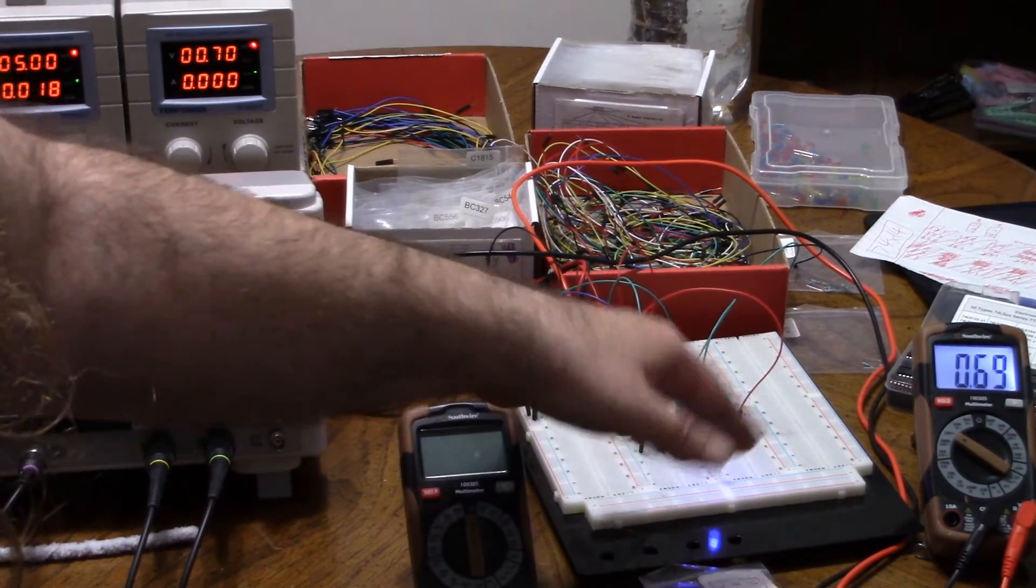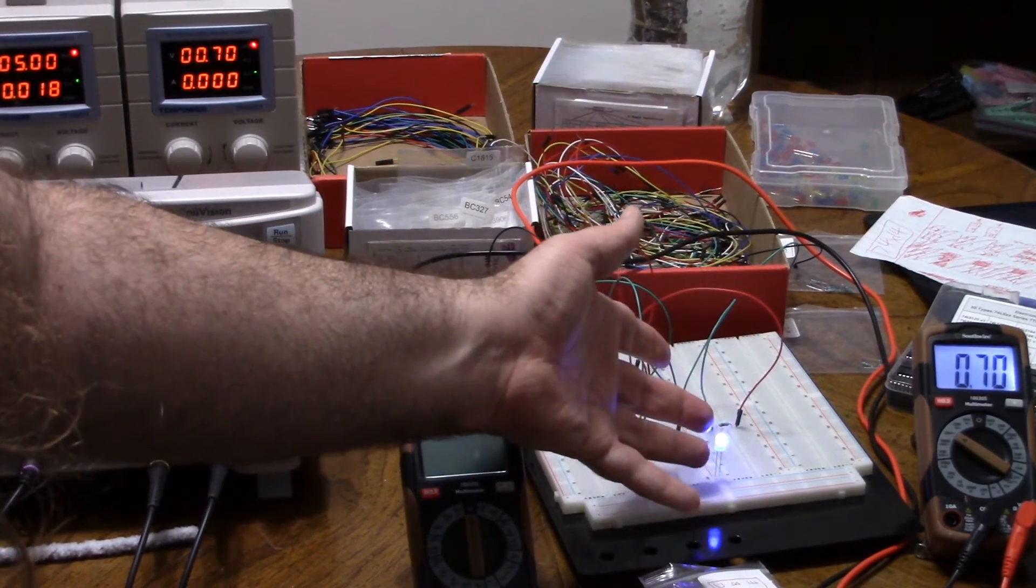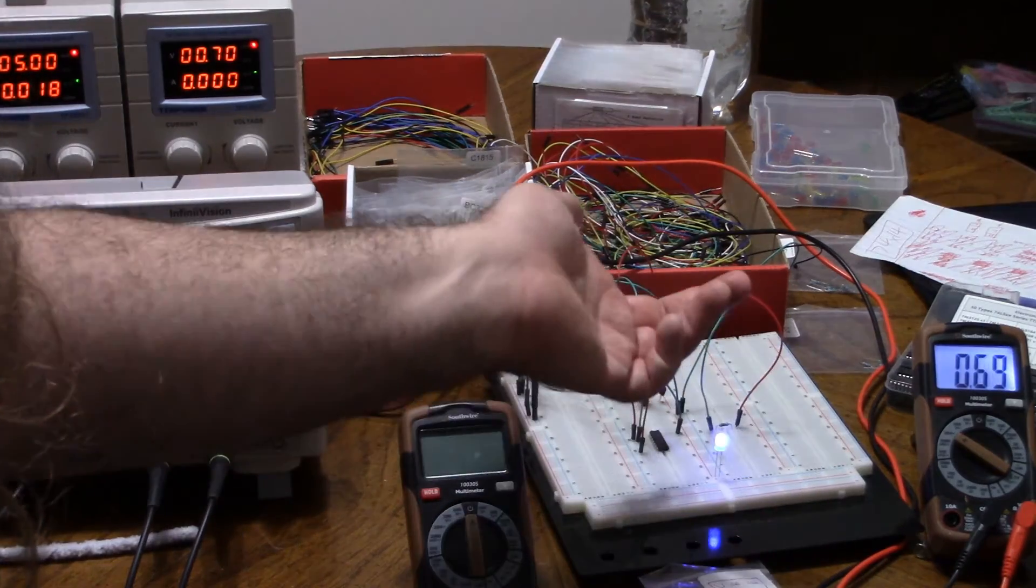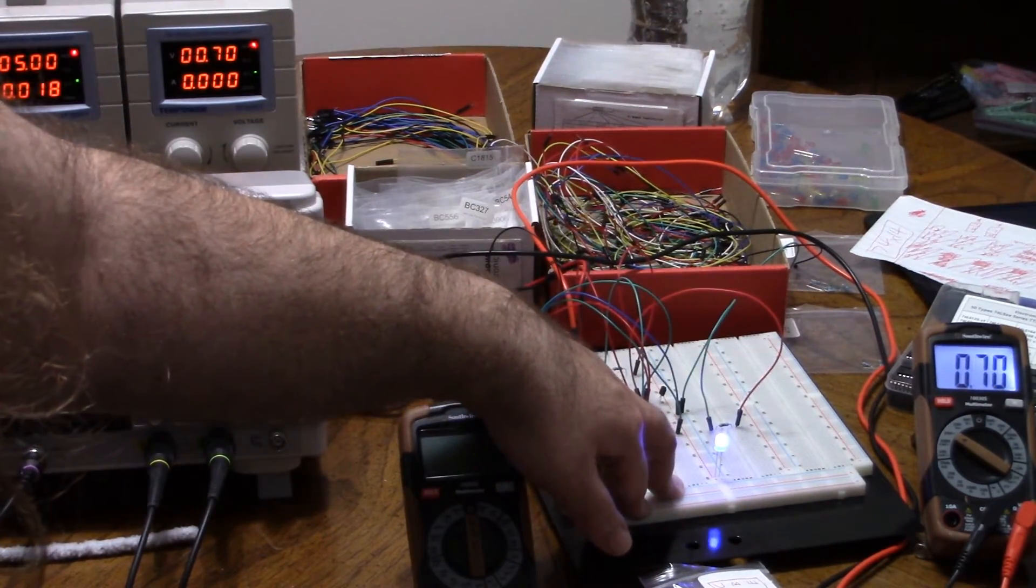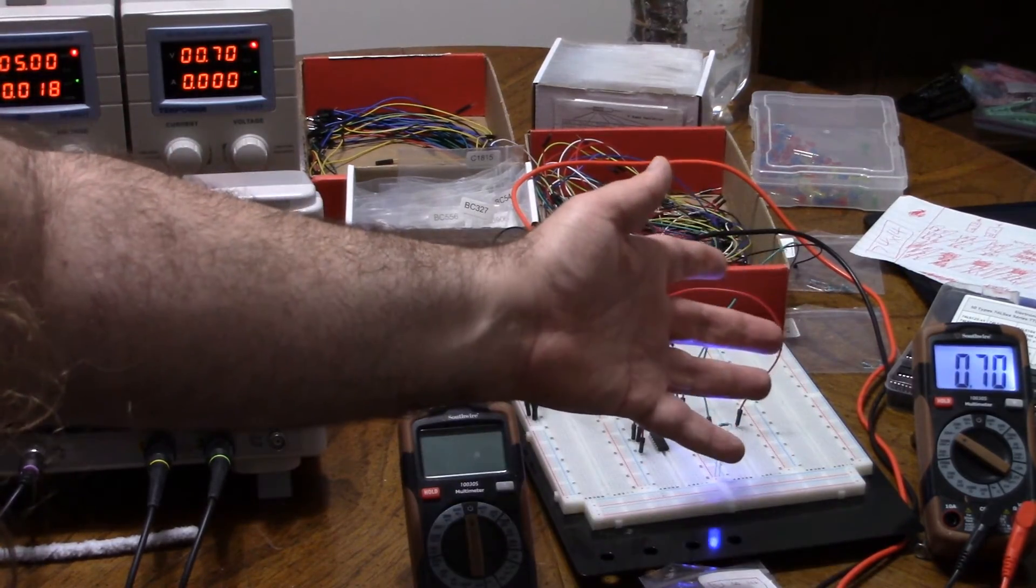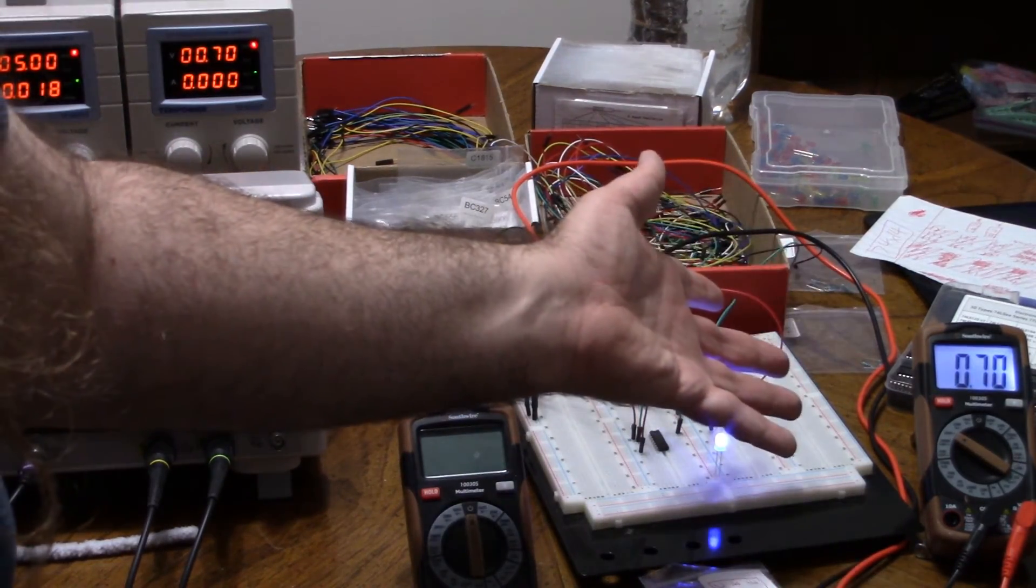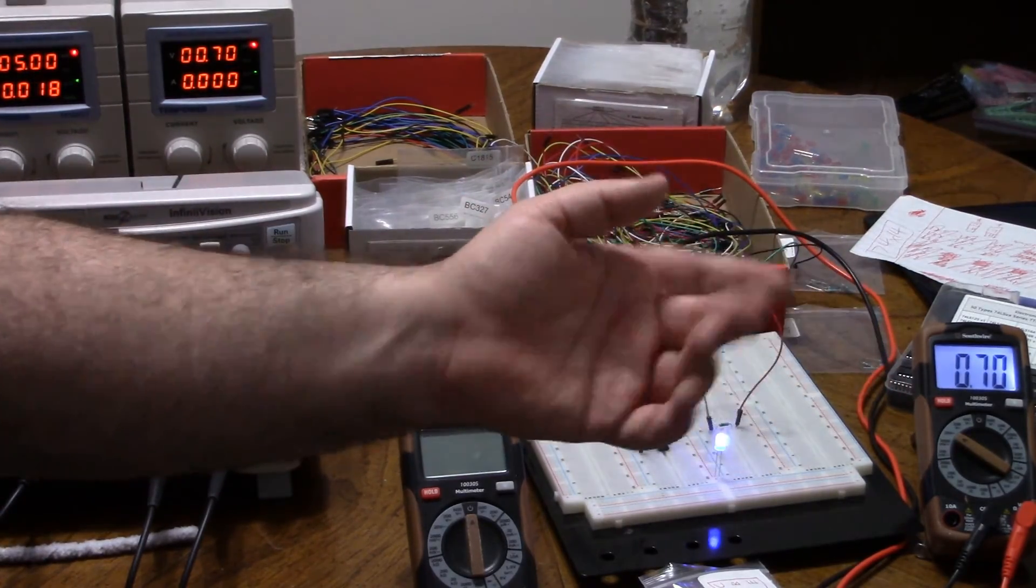But I'm sure that an actual CMOS chip, something perhaps in the 4000 line, because this is the 74 line, which is TTL, something based on CMOS technology with MOSFETs, might be better designed for switch debouncing at 5 volts, or more generally, the supply.